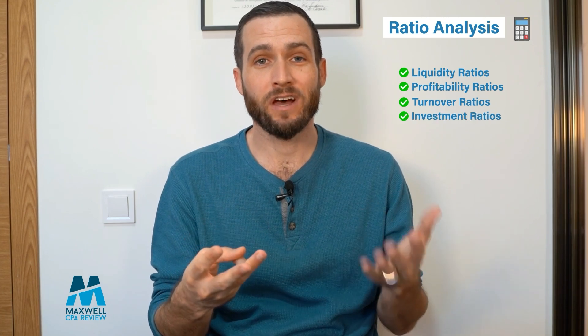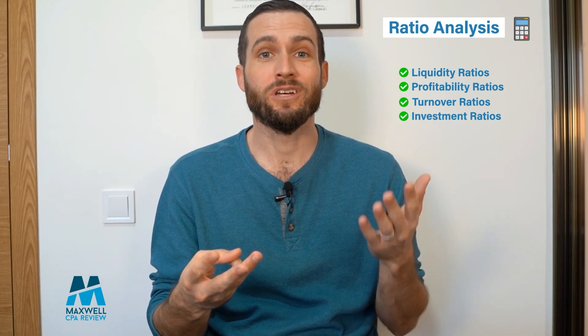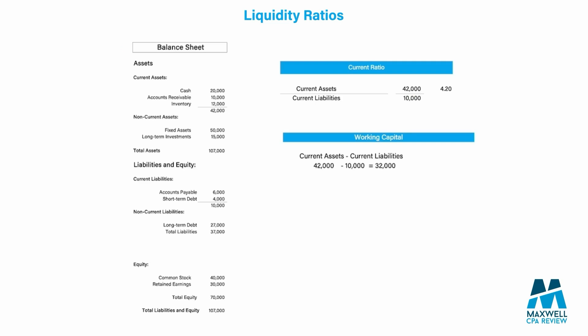We're going to address liquidity ratios like current ratio, profitability ratios, turnover ratios, and important investment ratios as well. So first, let's take a look at the balance sheet we're going to be using for all these ratios. We have our current assets and current liabilities section, which is very important for the liquidity ratios.